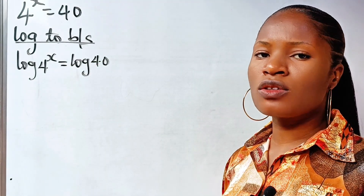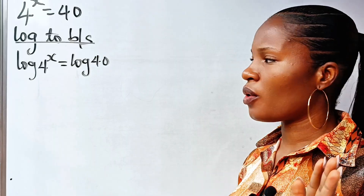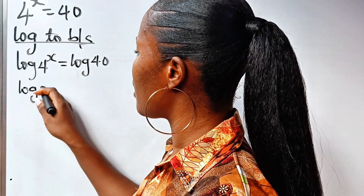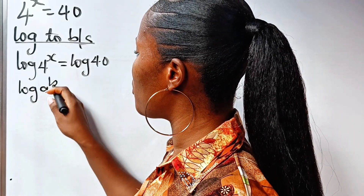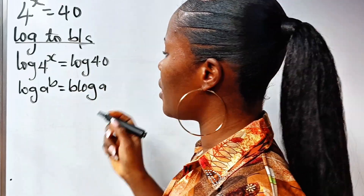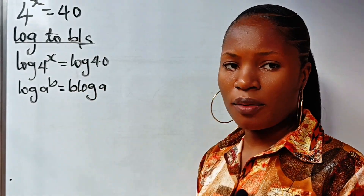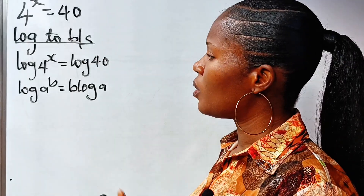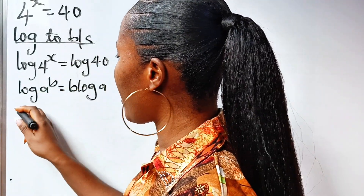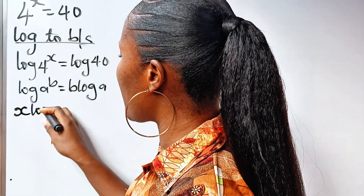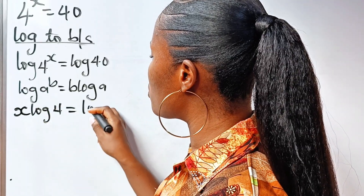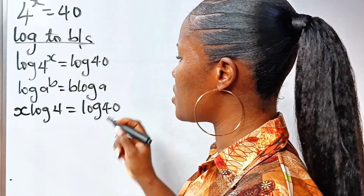I want you to recall that log a raised to the power of b is equal to b multiplied by log a. So we will write this as x multiplied by log 4 is equal to log 40.